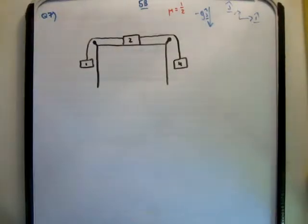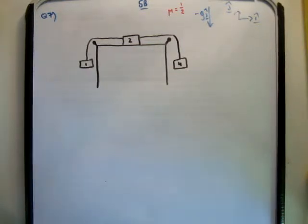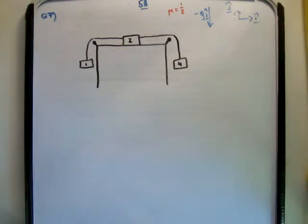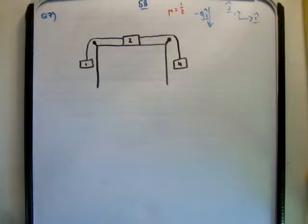In this video I'm going to continue on with exercise 5b of the book Fundamental Applied Mathematics from page 130, and the question is 7. It reads: the diagram shows a horizontal table on which a 2 kilo mass is placed. A 4 kilo mass and a 1 kilo mass hang freely over the sides. The coefficient of friction at the table is one half. Find the common acceleration of the 3 masses and the tension in each string.